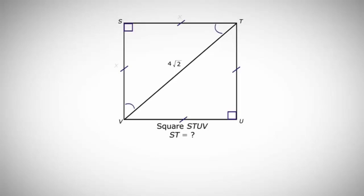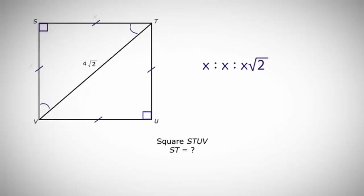Knowing that, we can solve for one of our side lengths. The side opposite of the 90 degrees is 4 times the square root of 2, which tells us that x is equal to 4. Line ST, therefore, is going to be equal to 4.